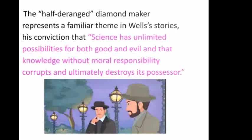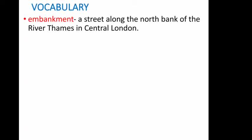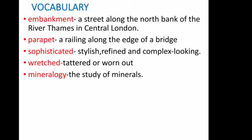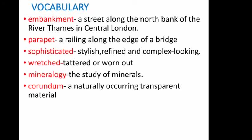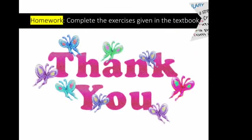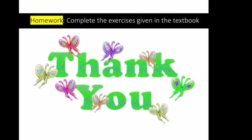The vocabulary words from this story include: 'embankment' — a street along the north bank of the River Thames in central London; 'parapet' — a railing along the edge of a bridge; 'sophisticated' — stylish, refined, and complex; 'ragged' — tattered or worn out; 'mineralogy' — the study of minerals; 'corundum' — a naturally occurring transparent material; 'costermonger' — a person who sells fruit or vegetables from a cart or street stand. Please learn the meanings and try to make sentences on your own.